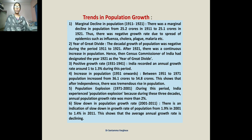Third point: positive growth rate. From 1931 to 1941, India recorded an annual growth rate of 1 to 1.3 percent. Fourth point: increase in population. From 1951 to 1971, population increased from 36.1 crore to 54.8 crore. This shows that after independence there was a tremendous rise in the population of India.